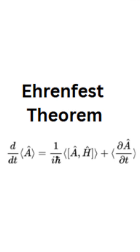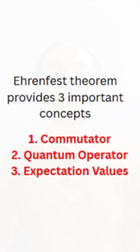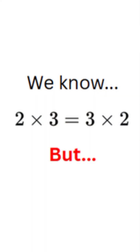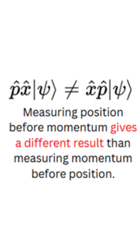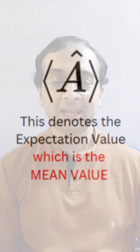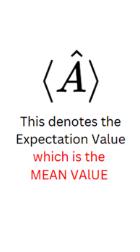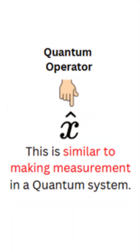The Ehrenfest theorem looks a little complicated and intimidating, and the equation looks something like this. However, there are three important concepts. The first is called a commutator — in everyday math, 2 times 3 equals 3 times 2, but in quantum mechanics it is not the same. Next comes expectation values, which are mean values. Then we have quantum operators, which give measurable physical quantities. The theorem puts all of these things together into a single equation.